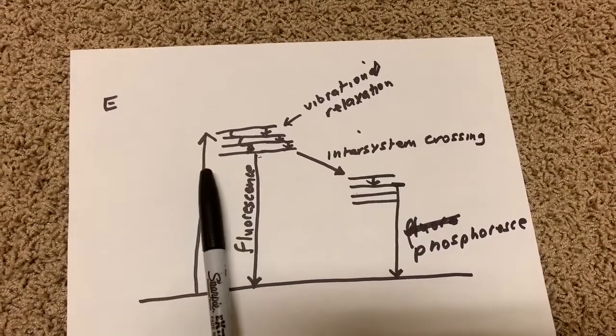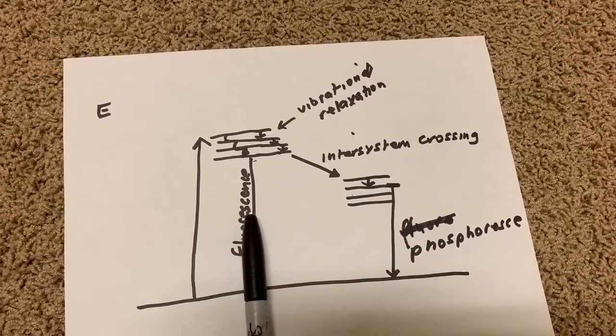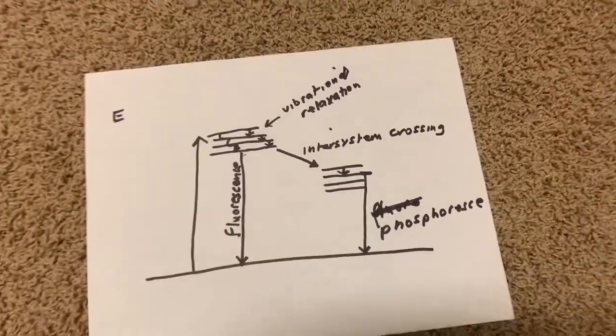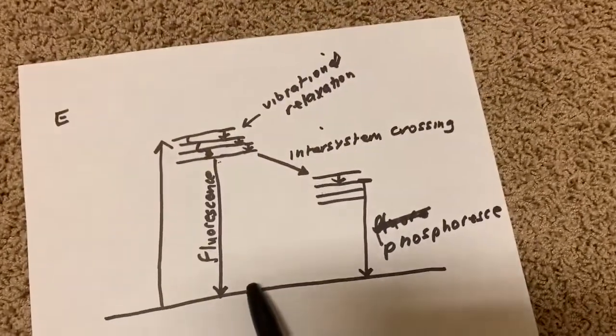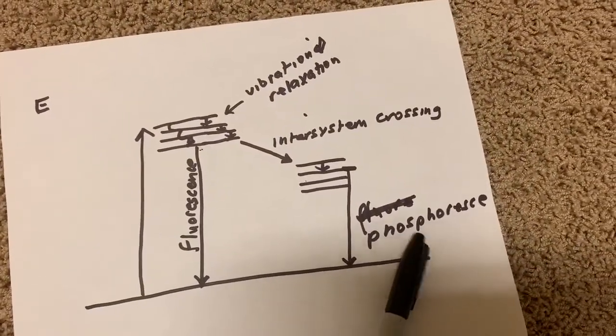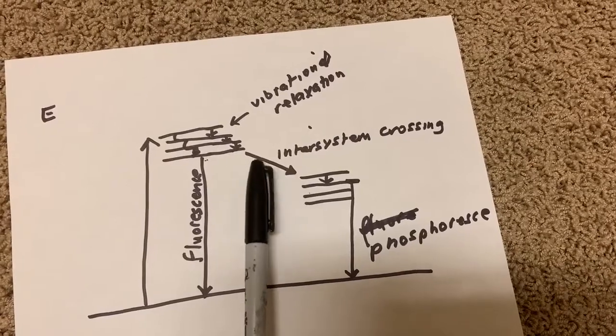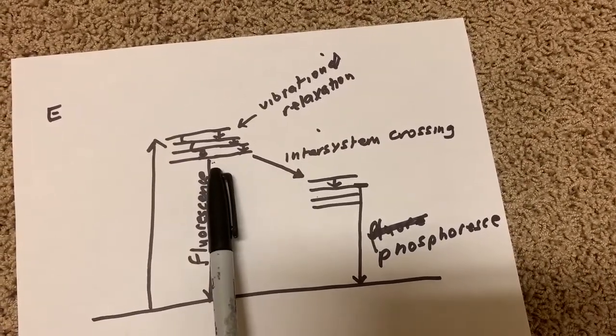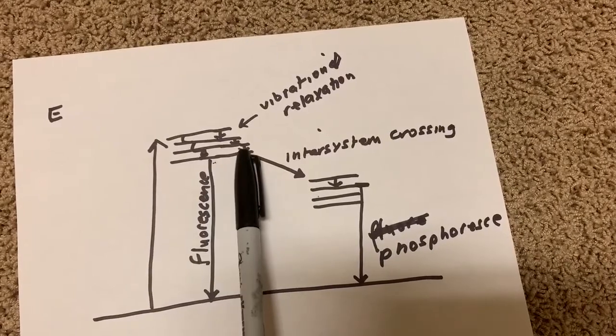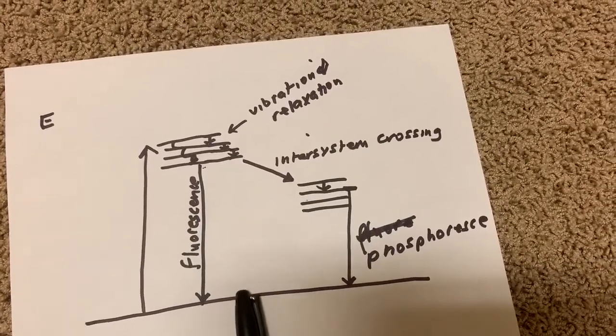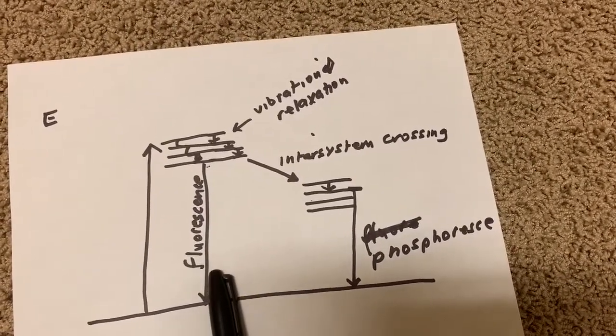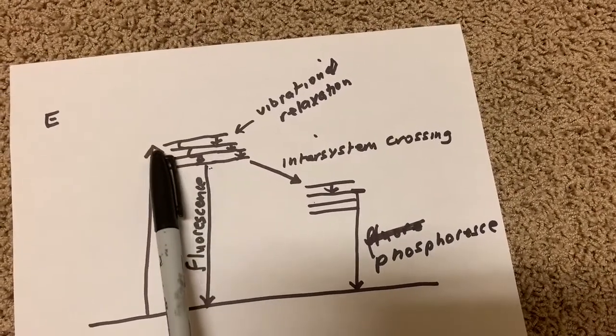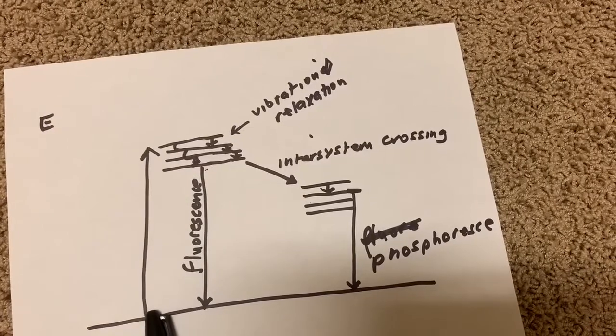When the energy source is turned off, there's no more visible light being produced. That is different from phosphorescence, where there's a process called inter-system crossing. Instead of dropping back down to the original level and re-emitting lower energy light—this was ultraviolet light.